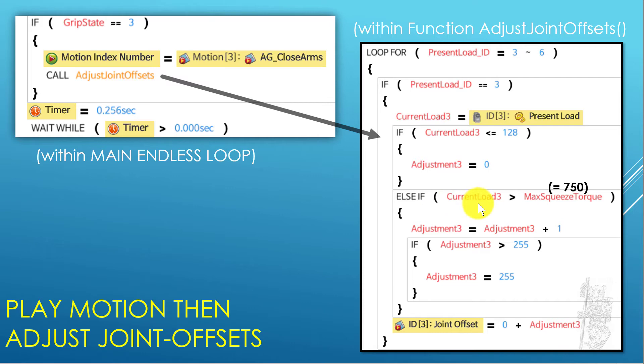Else, if that current load is bigger than 750, then it needs to add one each time. You can see that this algorithm here, this adjustment 3, is cumulative. Basically integrating on it, adding one unit of joint offset every time. However, adjustment on your joint offset can only be up to 255. So if it gets to that point, it's 255, and then it sets whatever that adjustment 3 is to the joint offset.